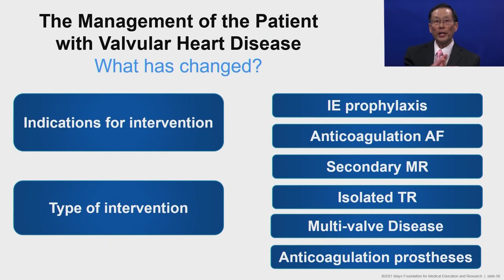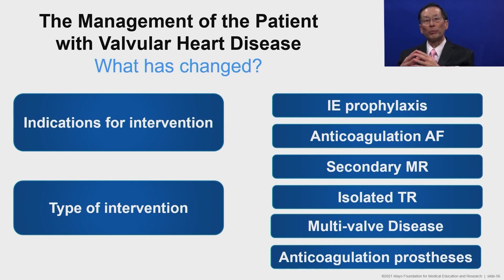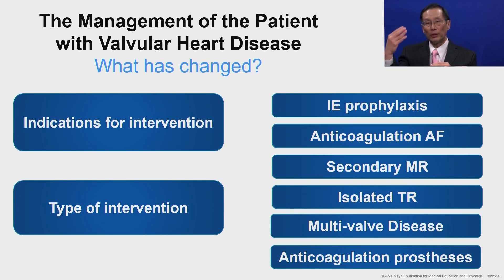In summary, what has changed in the management of valvular heart disease: the overall concept that the indication for intervention is lowering to prevent adverse consequences of longstanding pressure and volume overload; the type of intervention, now that catheter-based therapies are available, creates more complex decision making; and a number of important practical implications have emerged from the 2020 guidelines. Thank you very much for your attention.